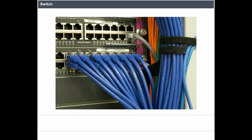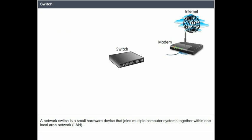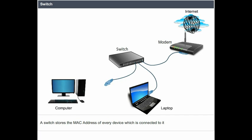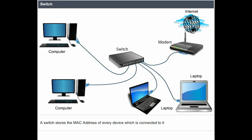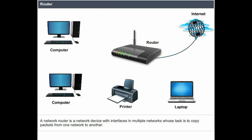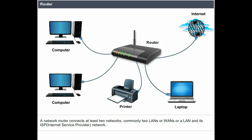Switch. A network switch is a small hardware device that joins multiple computer systems together within one local area network. A switch stores the MAC address of every device connected to it. Router. A network router is a network device with interfaces in multiple networks whose task is to copy packets from one network to another. A network router connects at least two networks, commonly two LANs or WANs, or a LAN and its ISP network.